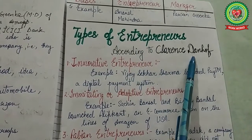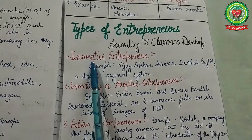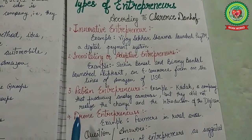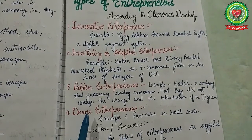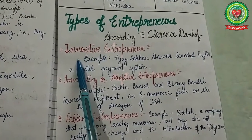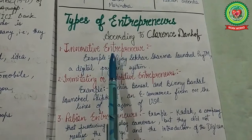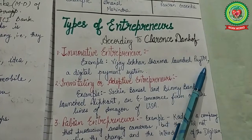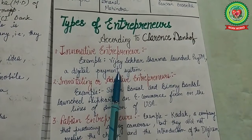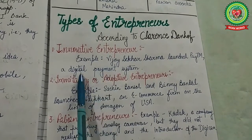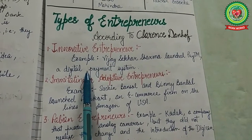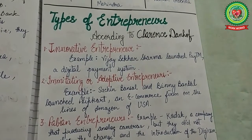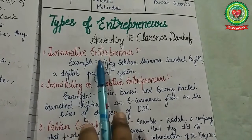According to Clarence Danhof, there are four types of entrepreneur: first, innovative; second, imitating; third, Fabian; and fourth, drone. The first type is the innovative entrepreneur. For example, Vijay Shekhar Sharma launched Paytm, a digital payment system providing online payment services to customers. An innovative entrepreneur discovers opportunities for introducing a new product, technique, or service for production and distribution.